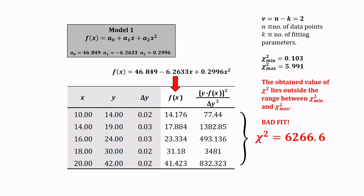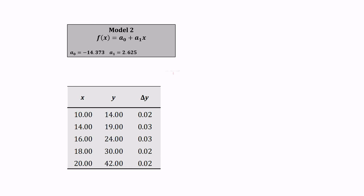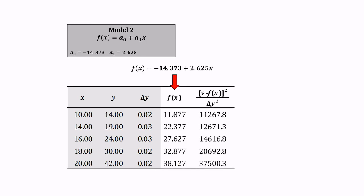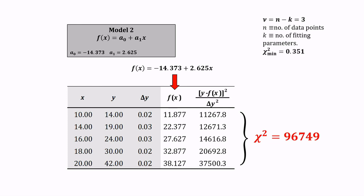We repeat the same chi squared calculation procedure for model 2. In this case, the chi squared value produced by model 2 is given by 96,749. Here, the degree of freedom is equal to 3, then the value of chi squared min is equal to 0.351, and the value of chi squared max is equal to 7.815.